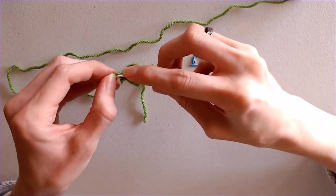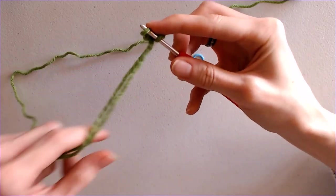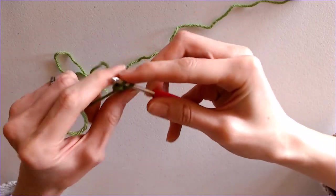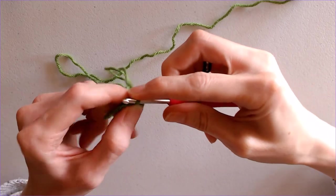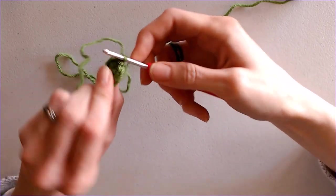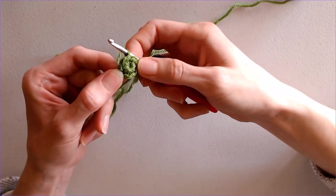I will then re-grab my working loop. Go ahead and pull that snug against the hook, and then pull that backwards through that very first stitch there, and that's how we're going to create the join.